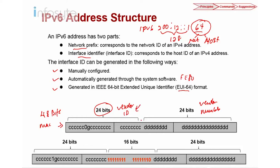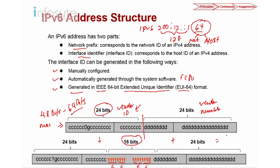What EUI-64 does — EUI stands for Extended Unit Identifier — is convert a 48-bit MAC address into a 64-bit interface identifier. They split the MAC address into two halves of 24 bits and insert a 16-bit value FFFE in between: 24 + 16 + 24 = 64 bits. Additionally, bit number 7 of the first 24 bits is flipped from 0 to 1. This is the EUI-64 standard.